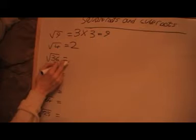And this one, that's the square root of 36. And again, that means I need to find a number that when I times it by itself, I get 36. And that's 6.